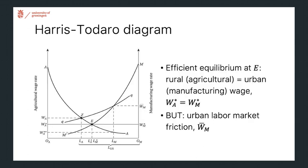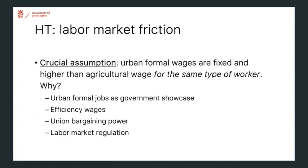If we were in an efficient equilibrium, wages in the two sectors would be equal and we would be at point E, with wages WA* and WM* and LA* and LM* workers in agriculture and manufacturing. But what sets this model in motion is an urban labor market friction, which leads to a higher fixed wage in manufacturing. That is a crucial assumption — formal urban wages are fixed and higher than agricultural wages for the same type of worker.